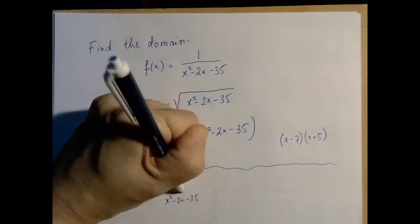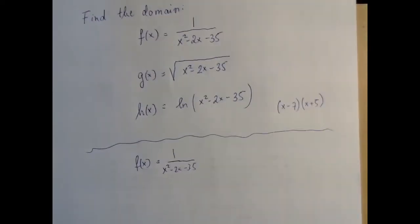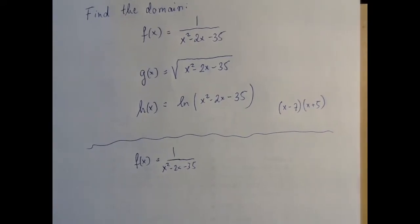For f of x, we need to worry about division by zero. So that means that first, we're going to have to find all the numbers that make the denominator zero and then kick them out from the set of all real numbers.